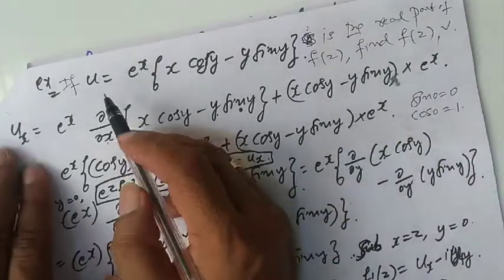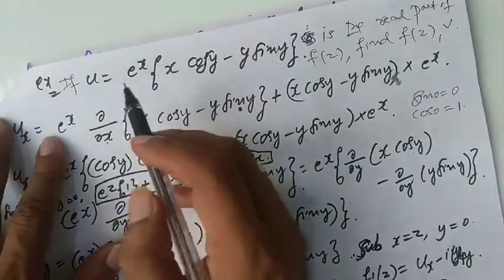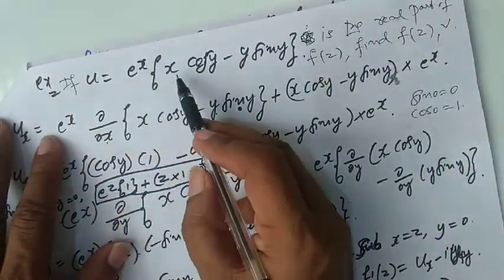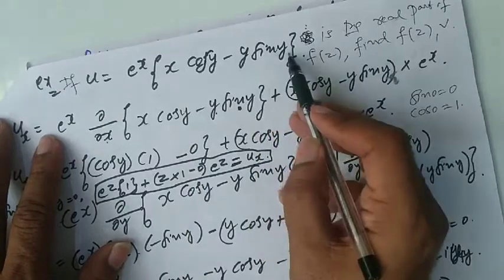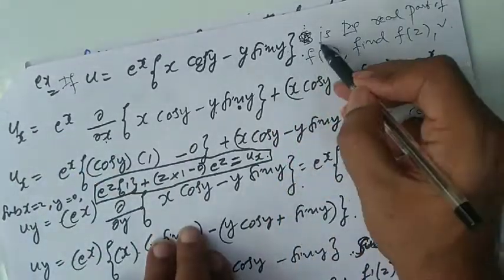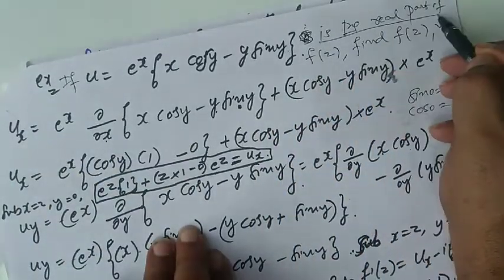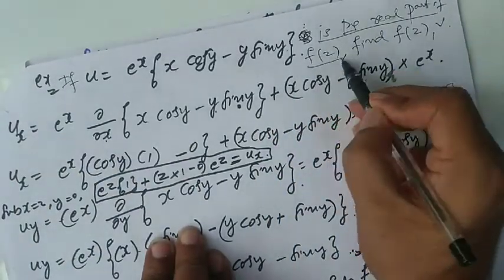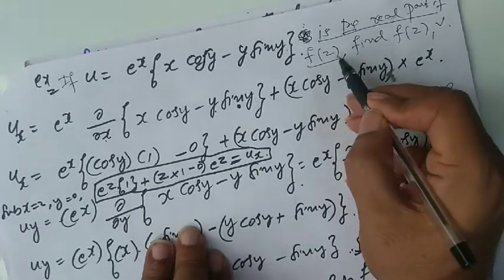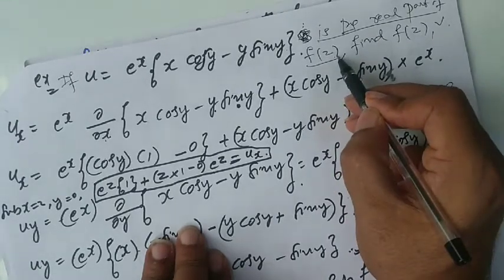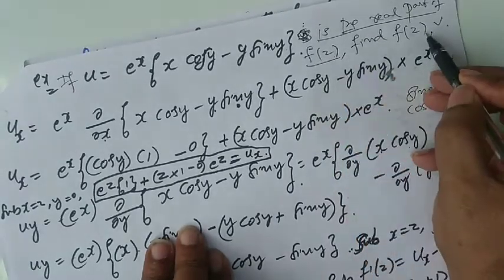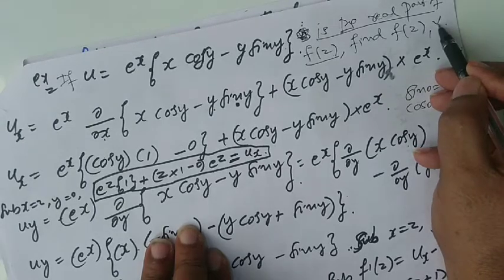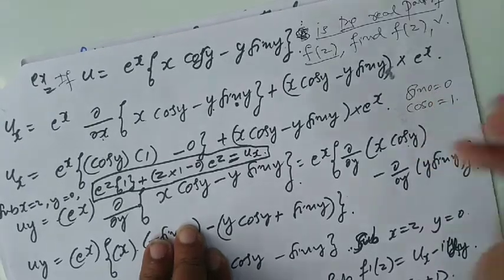Let us take one more problem on the Milne-Thomson method. If u is equal to e to the power x into x cos y minus y sin y is the real part of an analytic function f(z), find f(z) and also find v. That is the question.